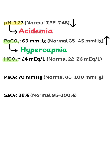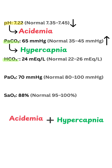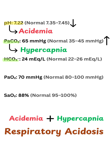What does this mean? If we put them together — a pH lower than normal at 7.22, acidemia, and hypercapnia — that means we have respiratory acidosis. So there we go; we have the bulk of the job done now.